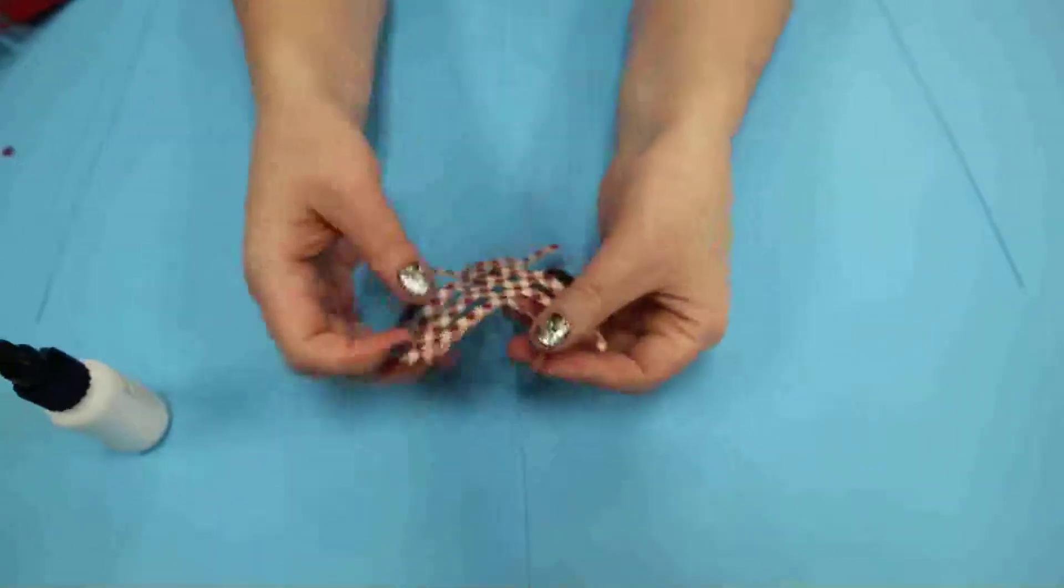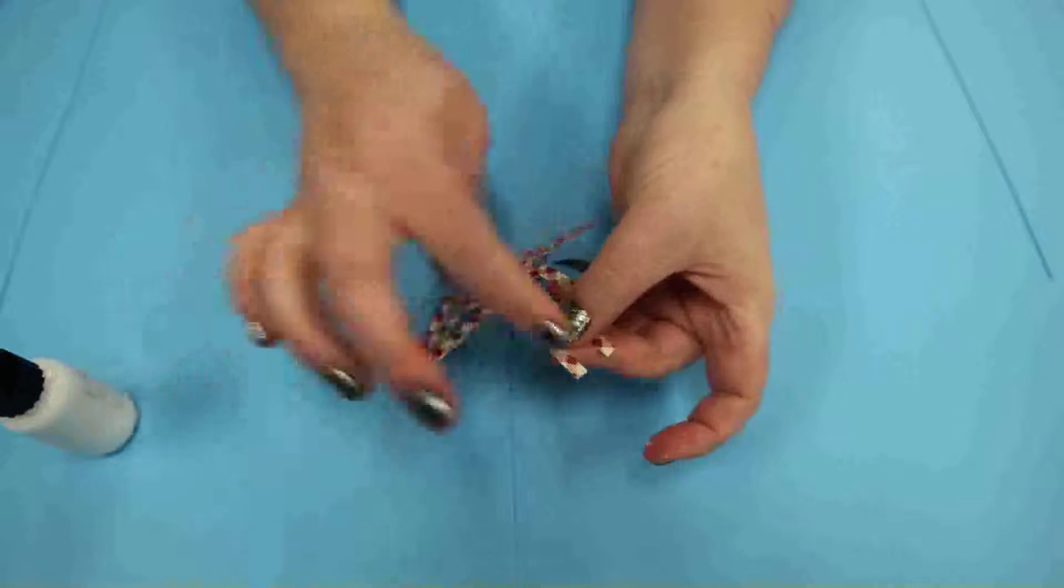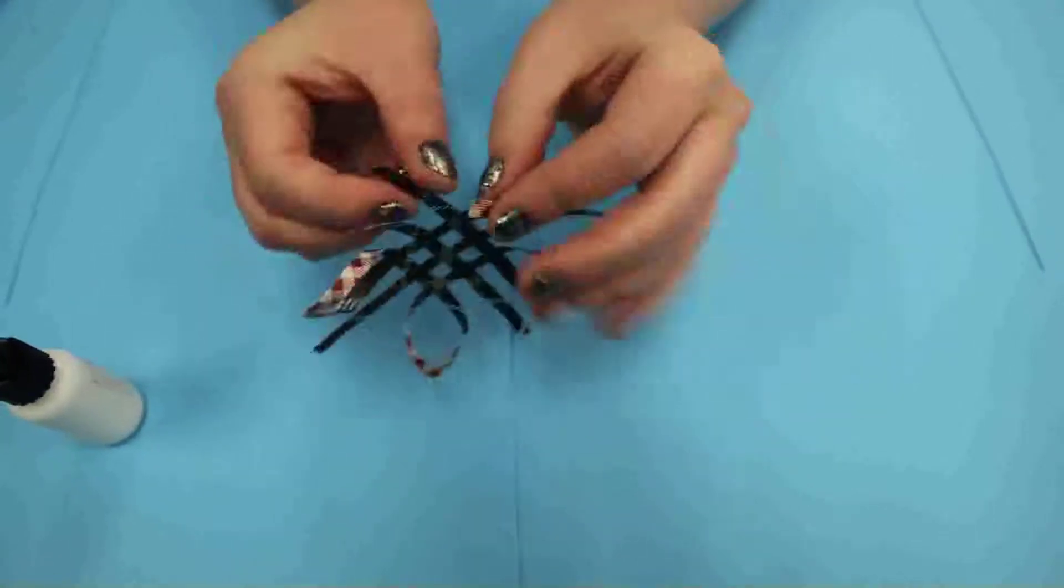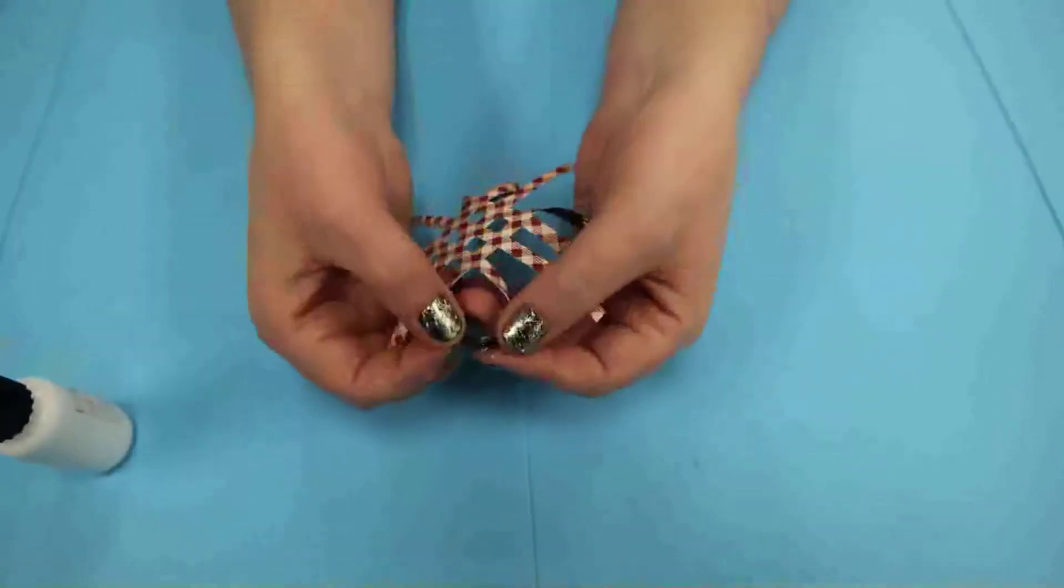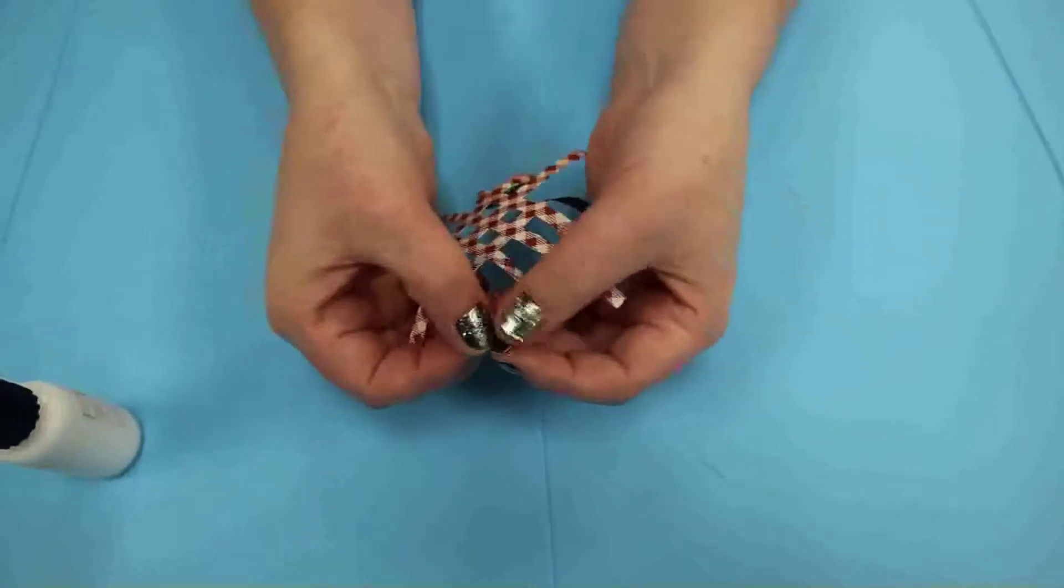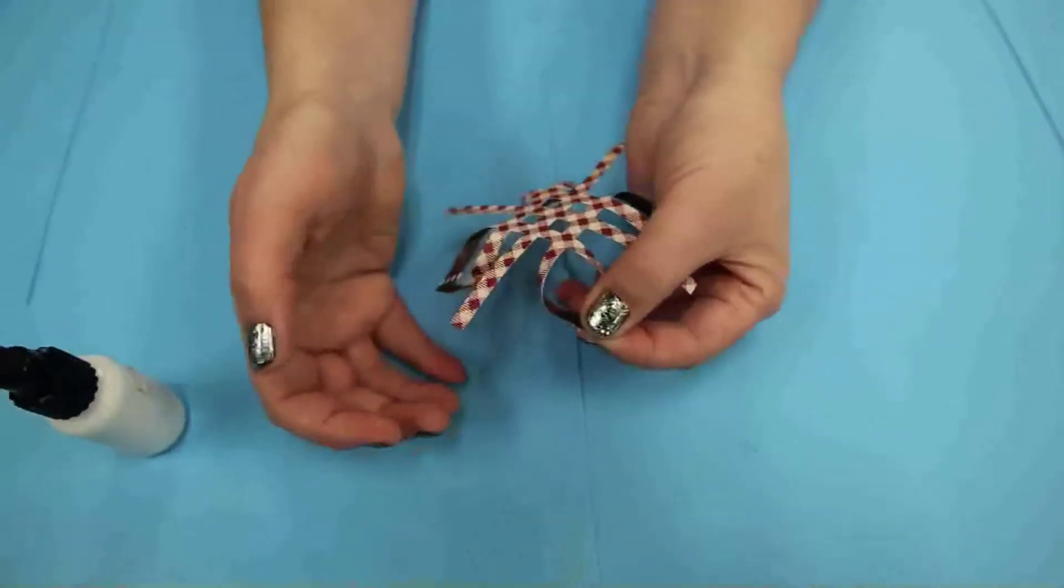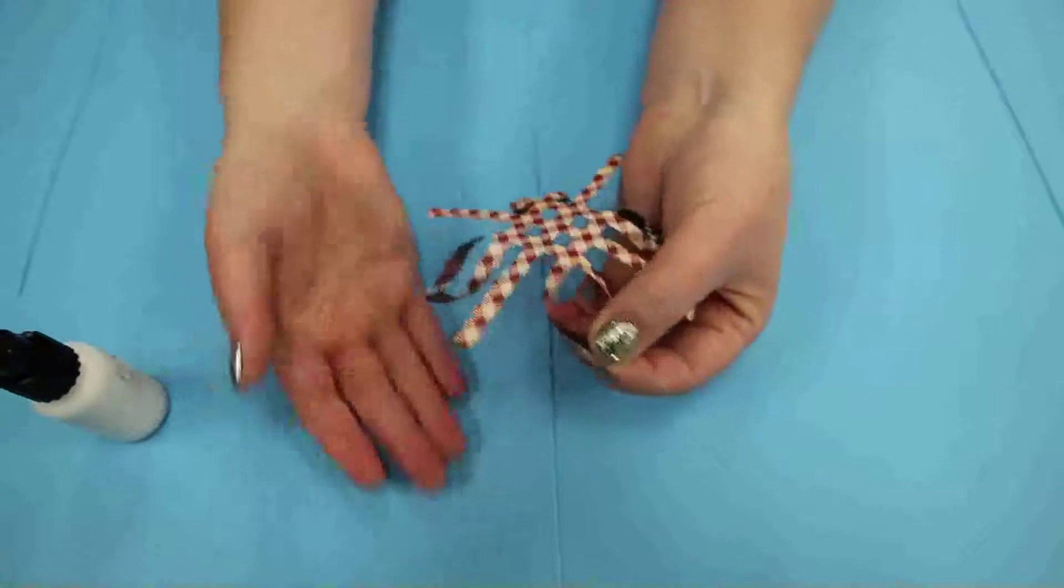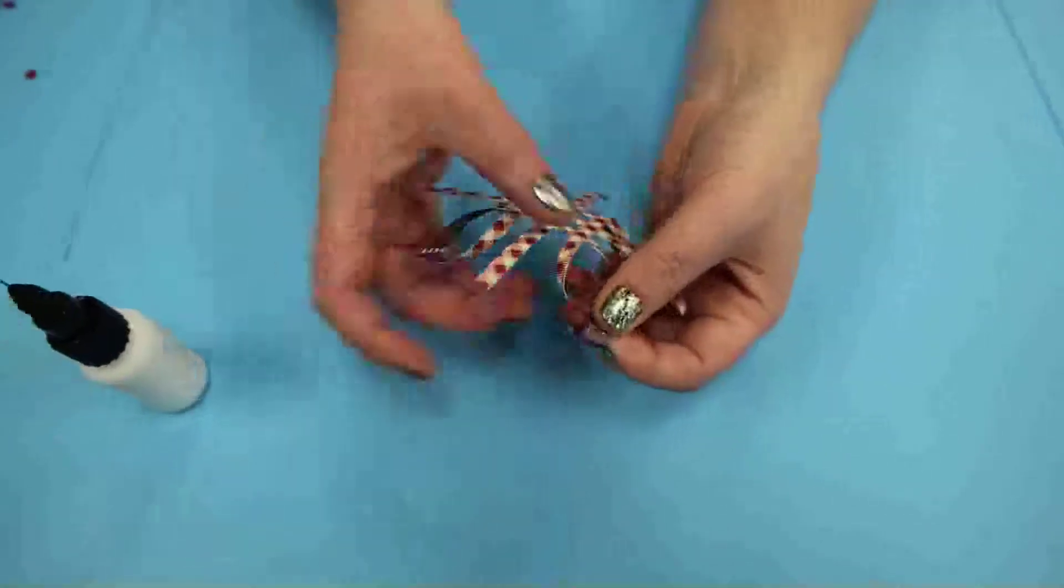And then the last one. So basically you're grabbing the ones that are at a 90 degree angle on the corners and those are the ones that you're joining. And then you're going to hold.